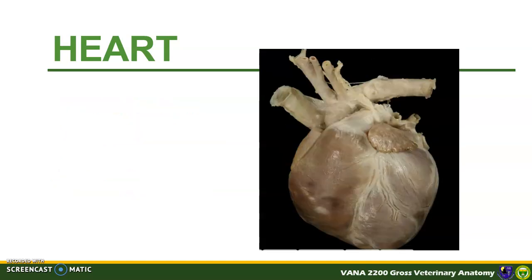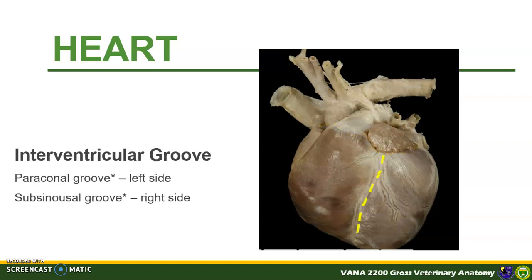If we remove the pericardial sac, we can see clearly the demarcation between the chambers. We can also see the coronary groove, which partially encircles the heart, making a separation between the atria and the ventricles externally. From the coronary groove to the apex, we can see the interventricular groove separating the two ventricles. There are two interventricular grooves: the paraconal groove on the left side and the subsinusal groove on the right side.